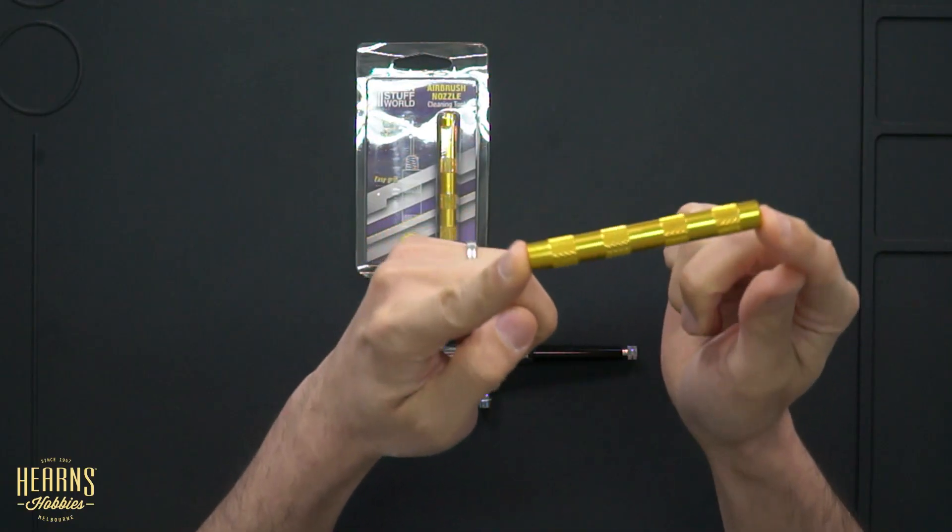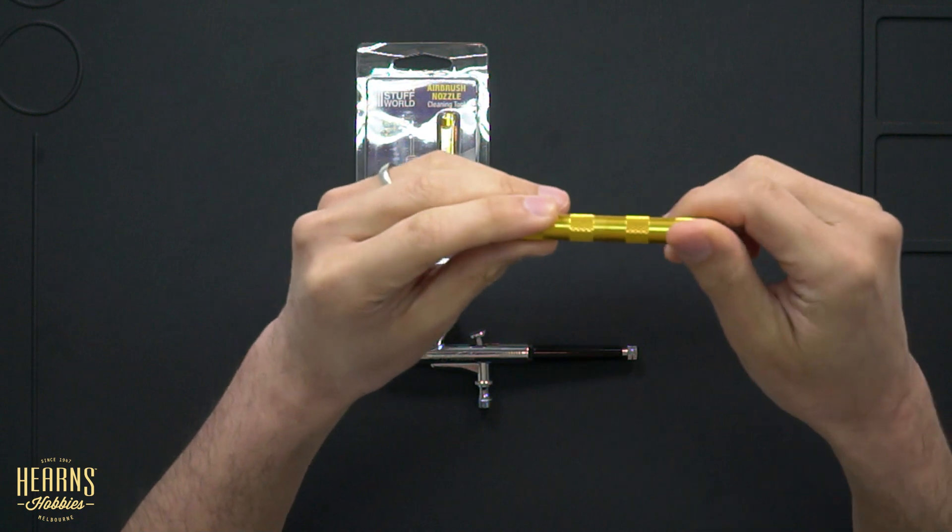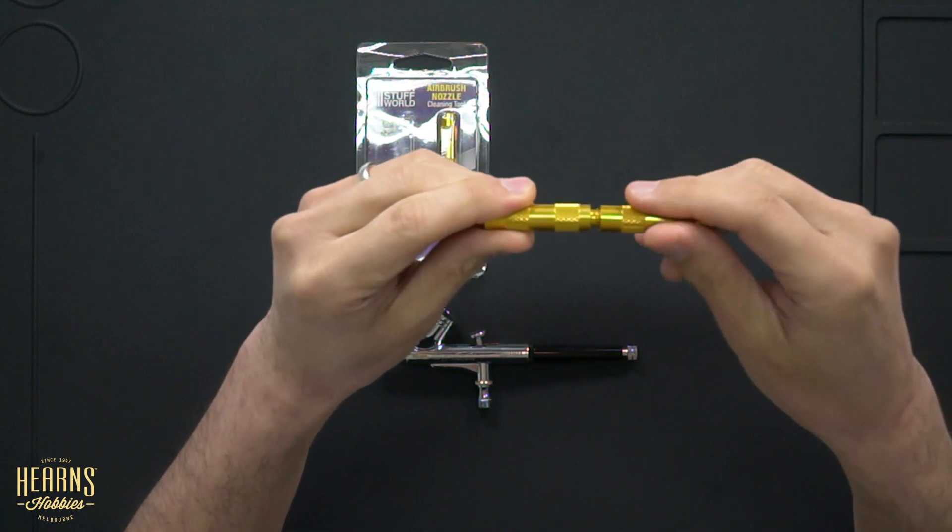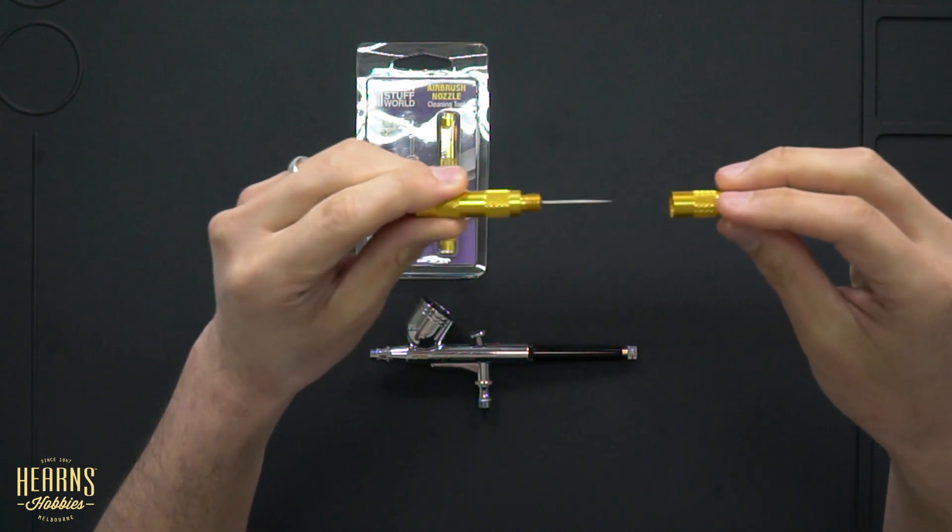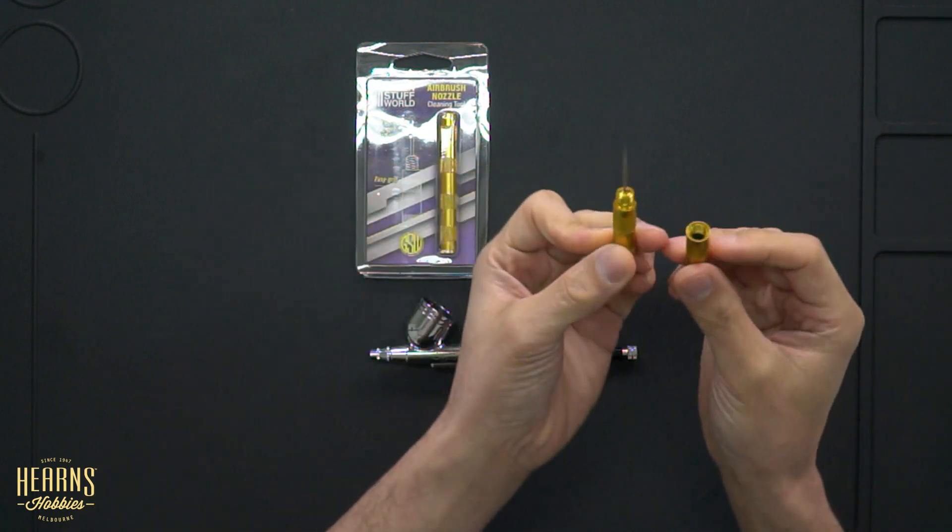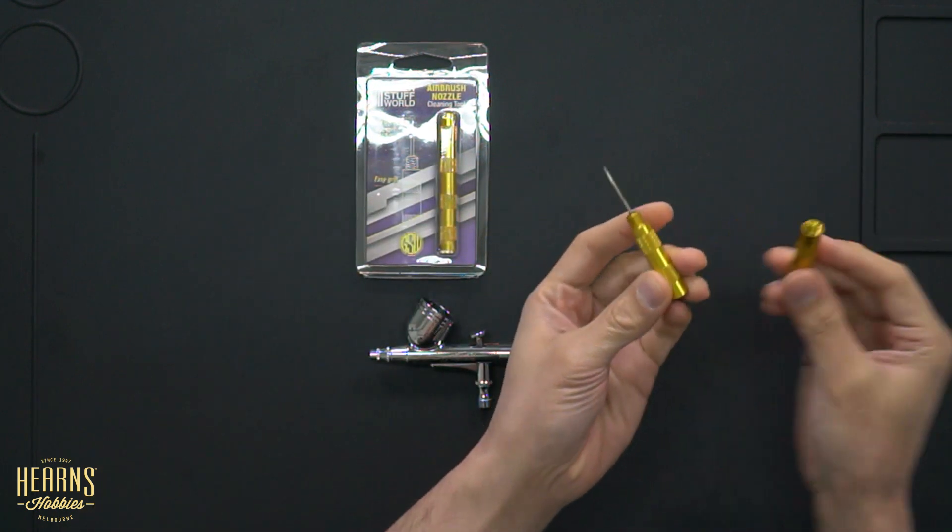So let's bring it down there. It's a little brass colored tool. It doesn't look like much now, but once we crack it open, just unscrews the end. And inside, there's this fine needle.